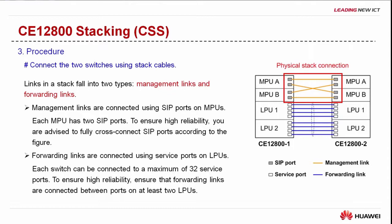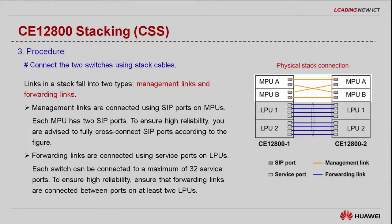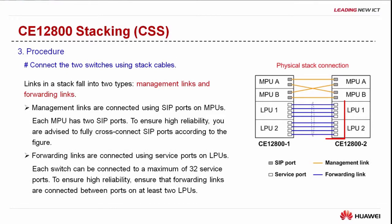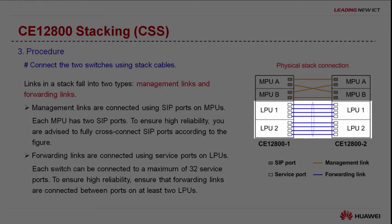Management links are used to forward stack management and maintenance packets and are connected using SIP ports on MPUs. Each MPU has two SIP ports. To ensure high reliability, you are advised to fully cross-connect SIP ports according to the figure. Forwarding links are used to forward inter-chassis service packets and are connected using service ports on LPUs. A forwarding link can be connected to a maximum of 32 ports. To ensure high reliability, use ports on different LPUs in each switch for connections.